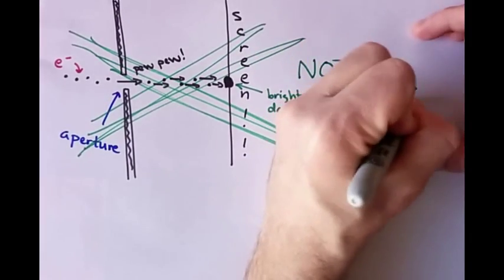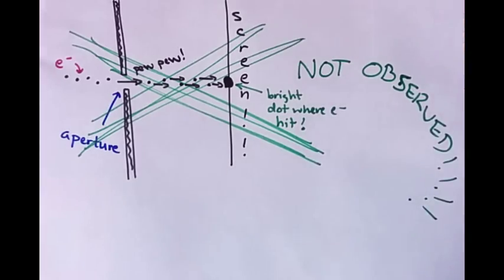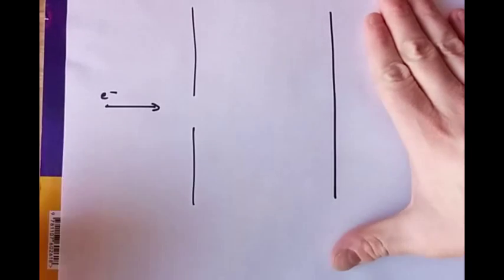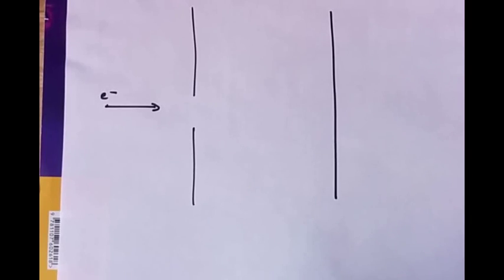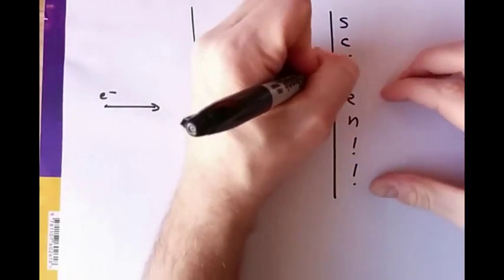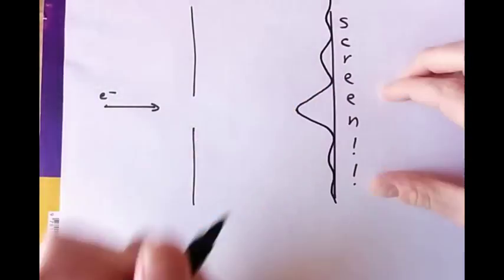If you send the electrons through a little aperture, when they get to the other side, or when you observe the other side, on the screen you will not see a little dot. You will see a diffraction pattern. And that is surprising.